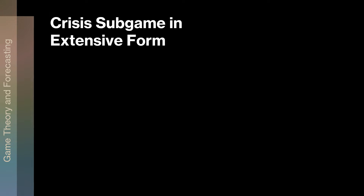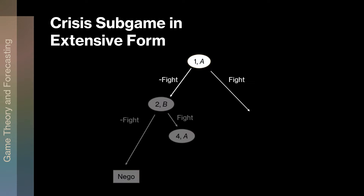What does the crisis sub game look like in extensive form? It starts with player A at node one. We've already got demands on the table, so now player A decides: do I fight or not fight? This labeling works if we're talking about war, about international interaction. More generally, do I go into conflict? Do I contest this? So we could have conflict or not conflict.